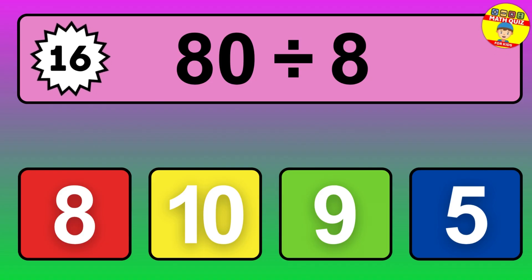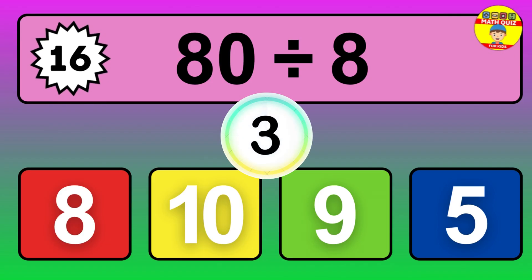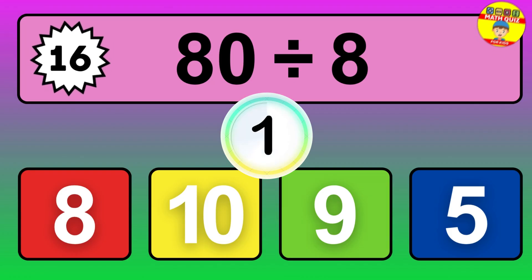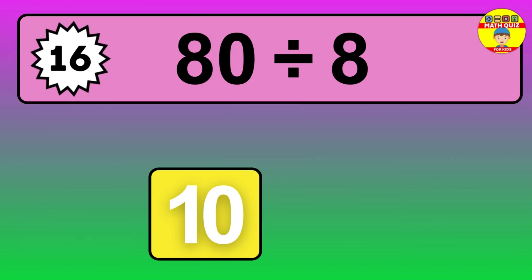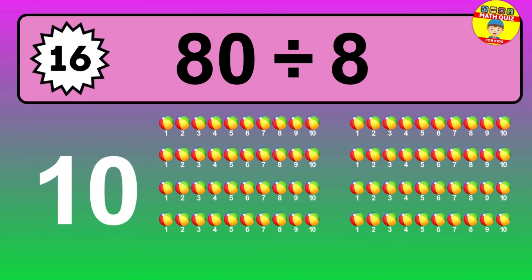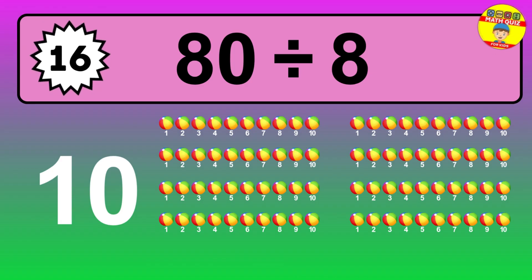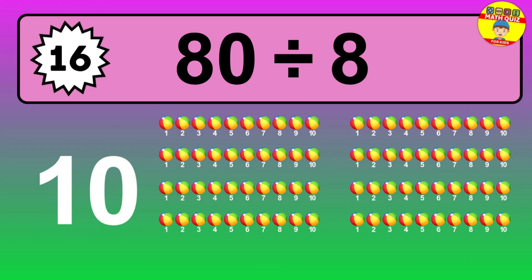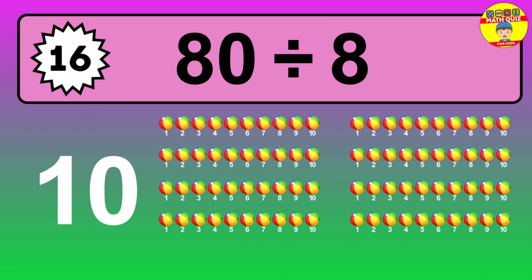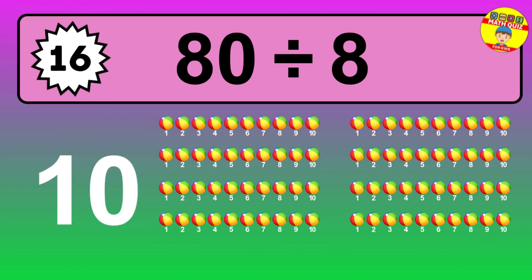What is 80 divided by 8? Picture this — you have 80 objects to divide into groups of 8. How many groups can you make? Let's think about it. Ready to find out? Let's break it down. Let's imagine you have 80 objects. Can you picture them lined up? Now think about splitting them equally into smaller groups of 8.